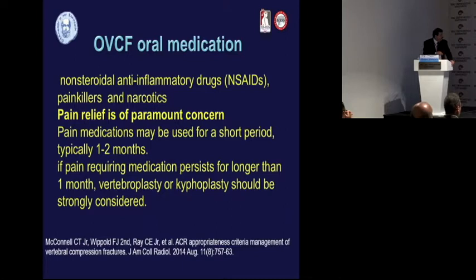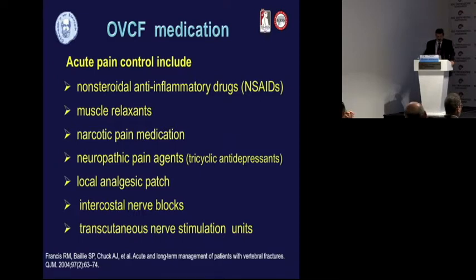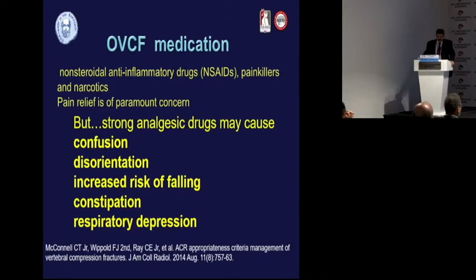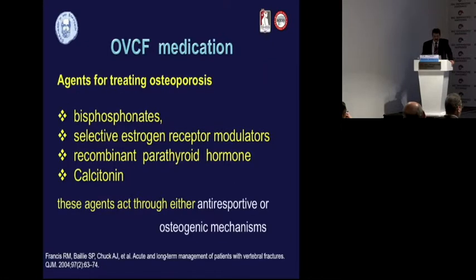Pain relief is a paramount concern, which is why analgesics play an important role: non-steroidal anti-inflammatory drugs, muscle relaxants, narcotic pain medications, local anesthetics, and transcutaneous nerve blocks. However, strong analgesics in elderly patients may cause confusion, disorientation, increased risk of falling, constipation, and respiratory depression — so even this approach is not entirely without risk.